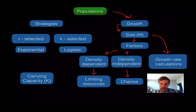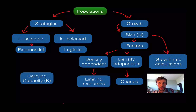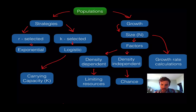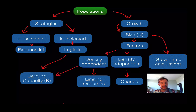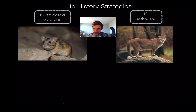We can calculate the growth rate of certain populations. There are different strategies organisms go through in their life — the two are called K-selected strategy and r-selected strategy. R-selection is associated with exponential growth and K-selection is associated with logistic growth. Logistic growth hovers around the carrying capacity, and that is also going to be influenced by density-dependent factors.